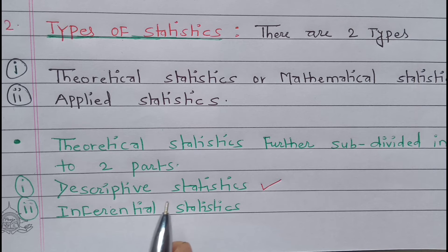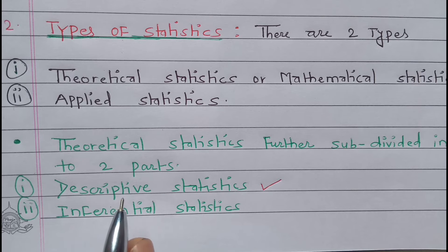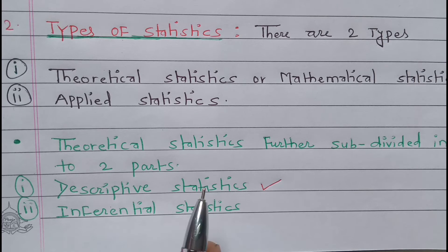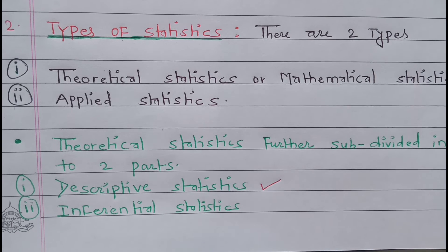Summaries of data which may be tabular, graphical, or numerical are termed as descriptive statistics. So newspaper, magazine, company reports, share market information, and other publications that present data in a summarized form easy for the reader — that's called descriptive statistics.